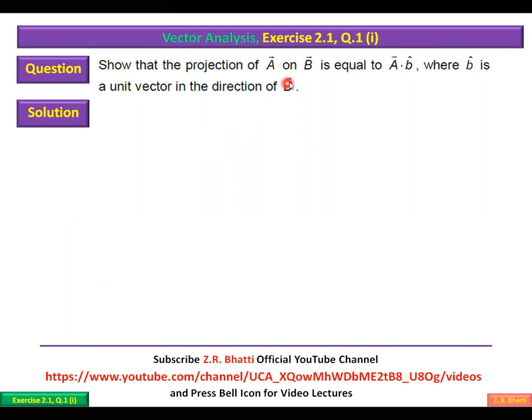Show that the projection of A on B is equal to A dot b, where b is a unit vector in the direction of B. In this question, we basically have to prove this result: if one vector and the other vector, a component of A along the vector, then both of them will be equal when we divide by the vector.